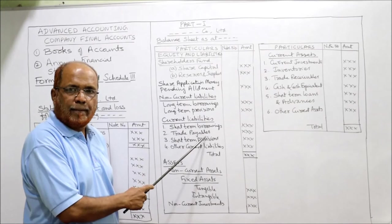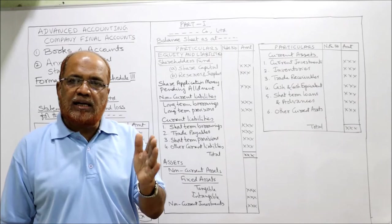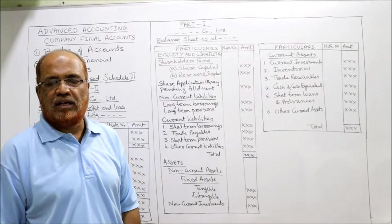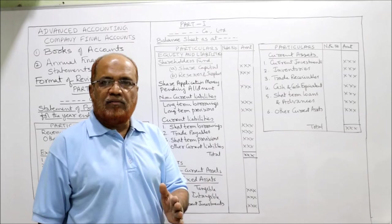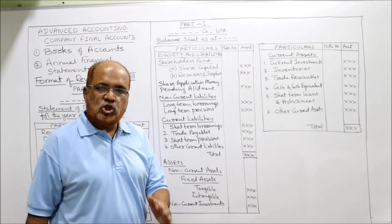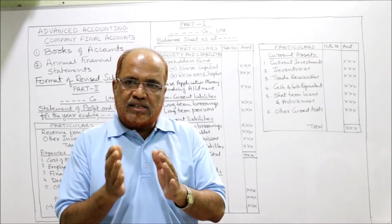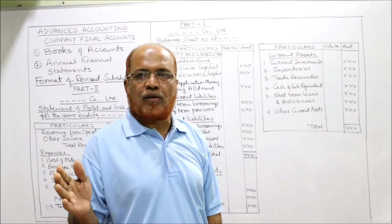On the asset side, again three items: first, non-current assets consisting of fixed assets classified into tangible and intangible, plus non-current investments if present. Then current assets including current investments, inventories, trade receivables, cash and cash equivalents, short-term loans and advances, and other current assets. This is the complete format of the statement of profit and loss and the balance sheet. We will discuss each and every item in detail.